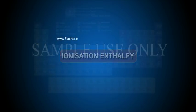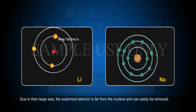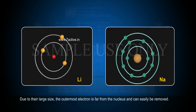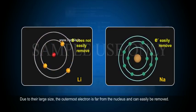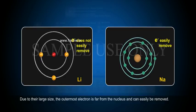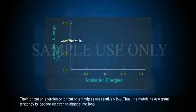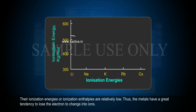Ionization enthalpy. Due to their large size, the outermost electron is far from the nucleus and can easily be removed. Their ionization energies or ionization enthalpies are relatively low.